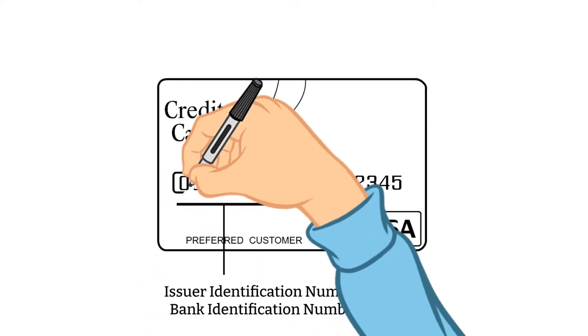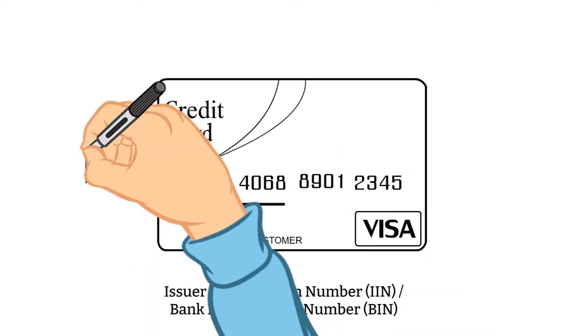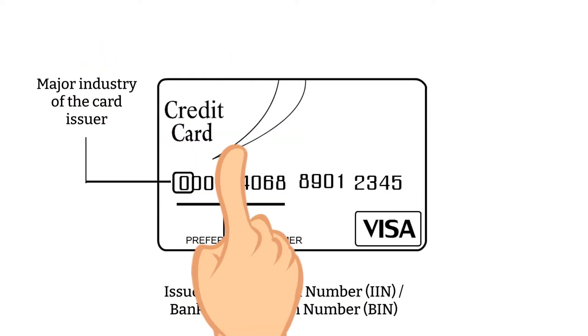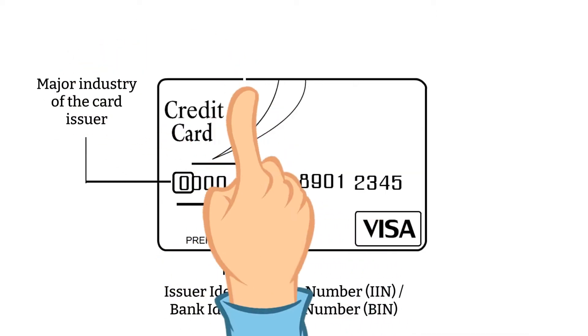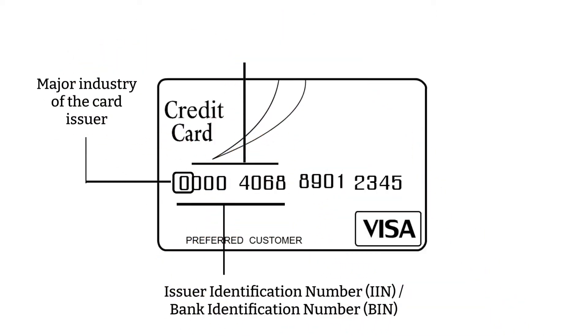According to the standard, the first digit denotes the major industry of the card issuer. The rest of the numbers in the IIN or BIN corresponds to the organization which issued the card.